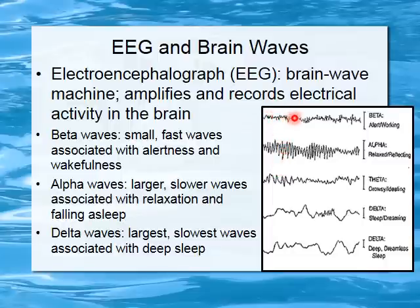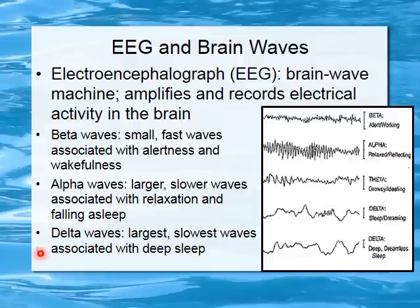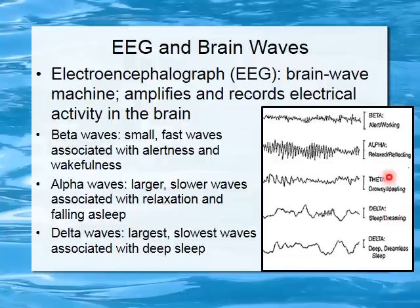Delta waves are our deep sleep — in pure delta we may even be in dreamless sleep, though some dreaming does occur. Theta waves are in between alpha and delta. You've been in theta when you're sitting on the couch, very relaxed, not quite asleep but not quite awake — just drifty. There's a good chance you were in theta waves at that point.